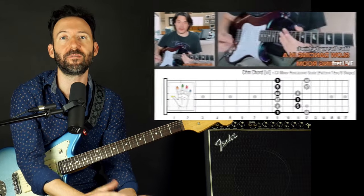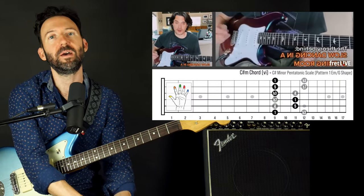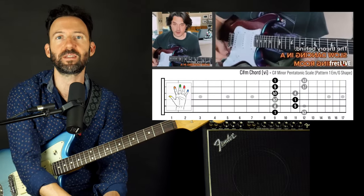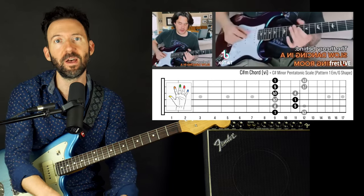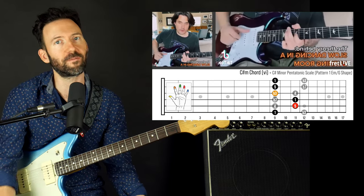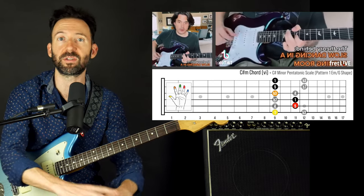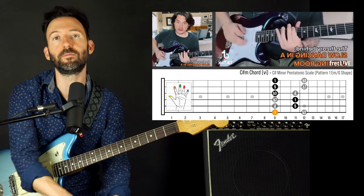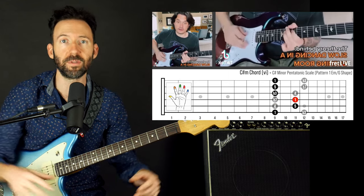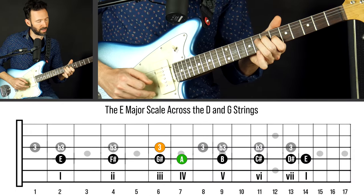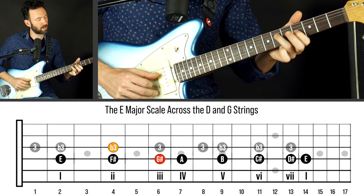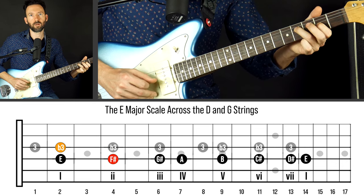Hey everybody, Gary here with Pow Music. I hope you enjoyed that explanation of the theory behind Slow Dancing in a Burning Room by John Mayer himself, with our added Fret Live animations to help illustrate the things that he was talking about. So in this segment of the video, we're going to go even deeper on some of the devices and techniques that John used.